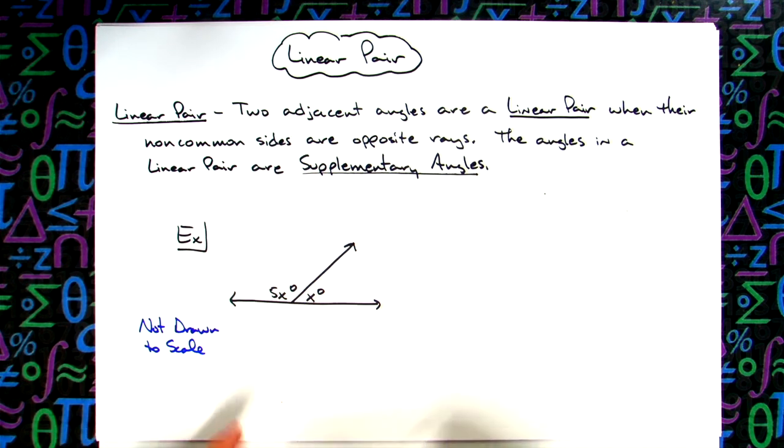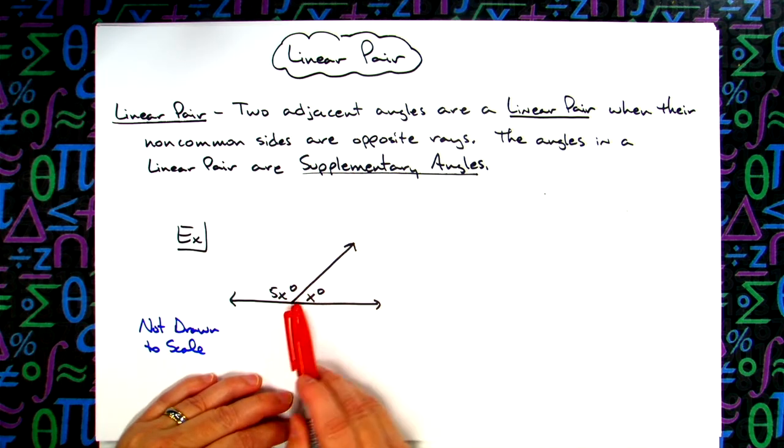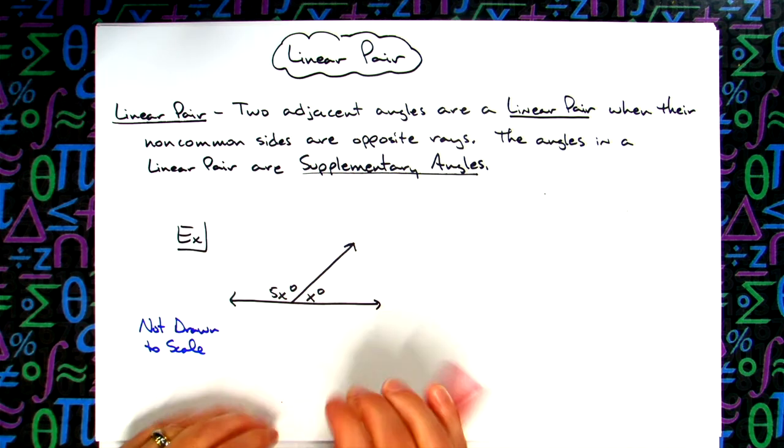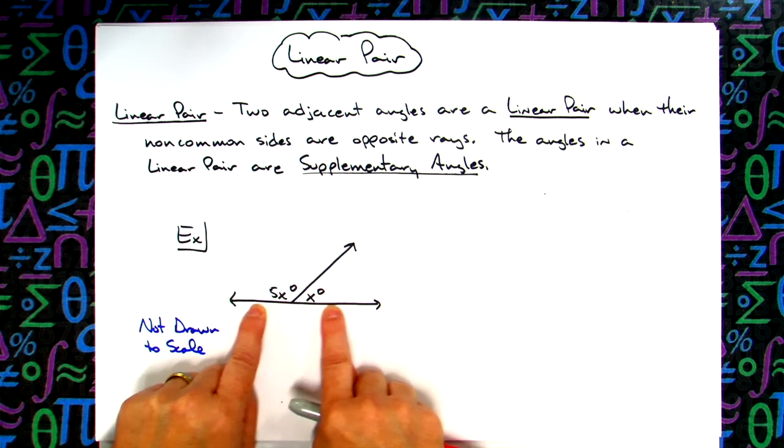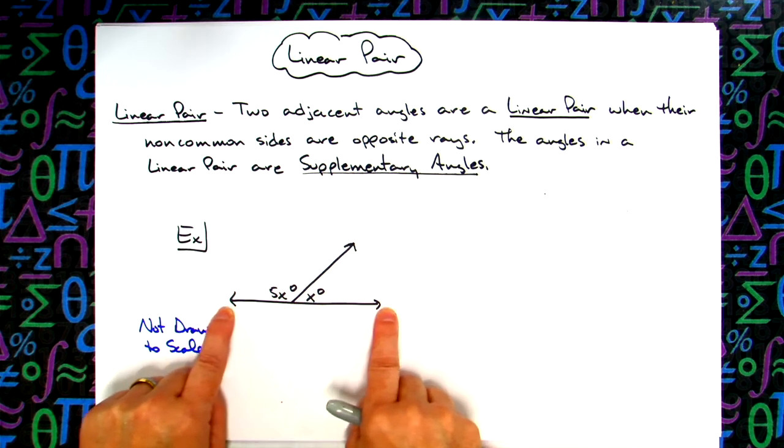This is two adjacent angles because they have a common side and they have a common vertex. Now when they're non-common sides, which would be these two sides right here.